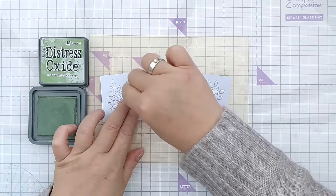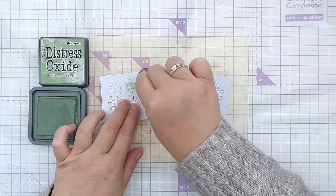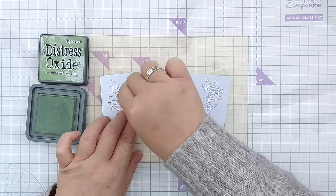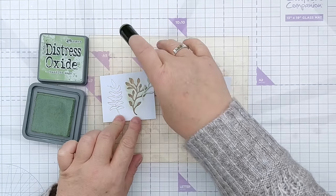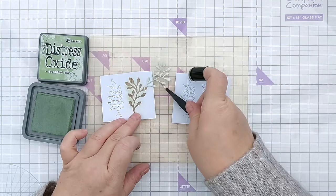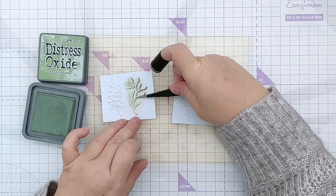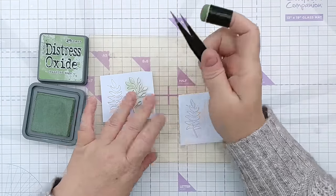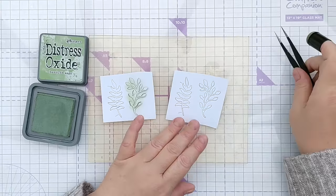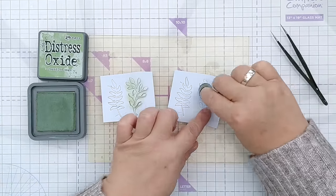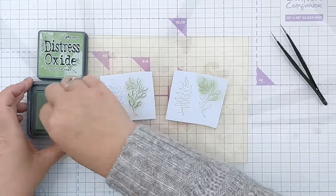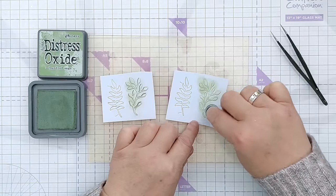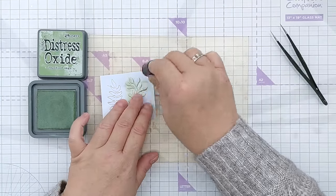I started with bundled sage distress oxide and a finger dauber and added some ink in a variegated way on two of my die cuts. Then I brought in some lucky clover and added a little bit here and there, again to bring in some variation to make the die cuts have a natural feel.